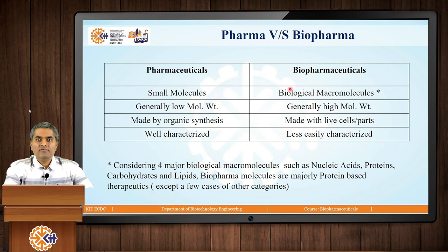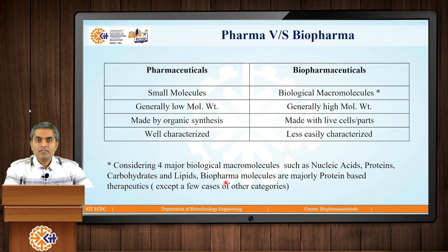When we talk about biological macromolecules, there are 4 major biological macromolecules considered. They are nucleic acids, proteins, carbohydrates, and lipids. The biopharmaceutical molecules in the market are majorly protein-based therapeutics. Only a few exceptions are from the other categories.